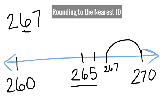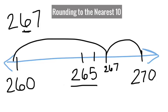Now I draw my jump to my multiples of two-seventy and two-sixty. I notice my jump to two-seventy is much smaller, therefore two sixty-seven to the nearest ten is two-seventy.